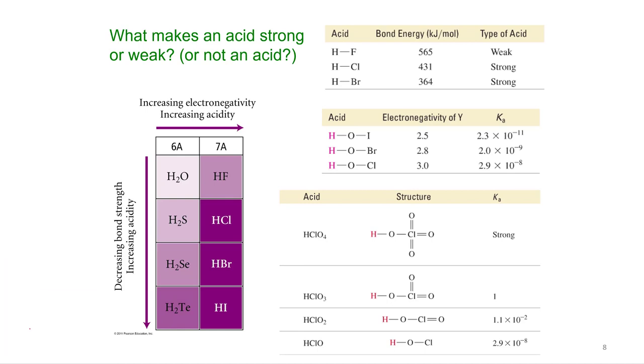So here's just a little bit of a review and more examples of what leads to something being an acid and also what determines its strength, whether it's a weak acid or whether it's a strong acid. Or if it's a weak acid, is it a really weak acid or a really strong acid.